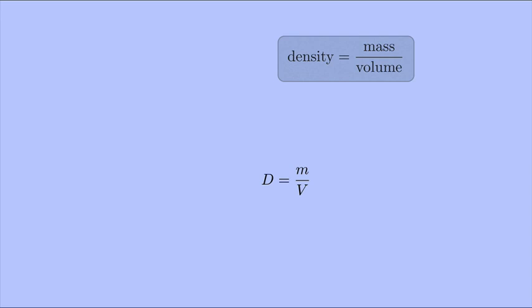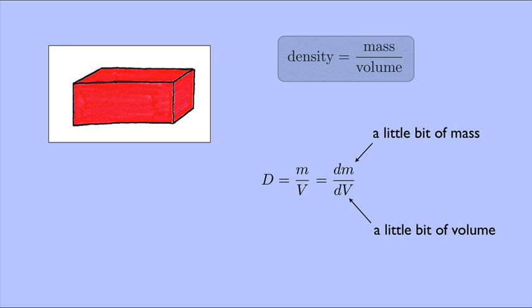Now you can also think of density as a little bit of mass over a little bit of volume. Because if I have a uniform object, the density of the whole object is going to be the same as the density of a little chunk of that object. And we're going to use this idea to solve problems in electricity and magnetism.